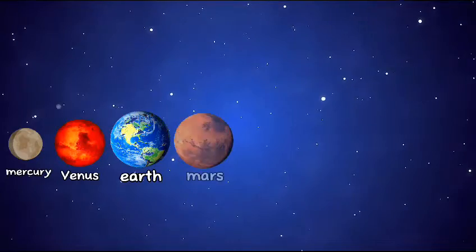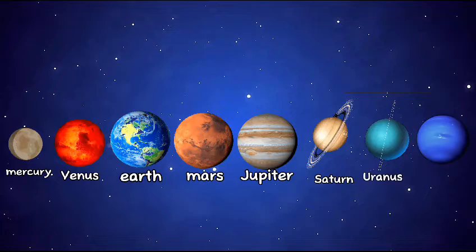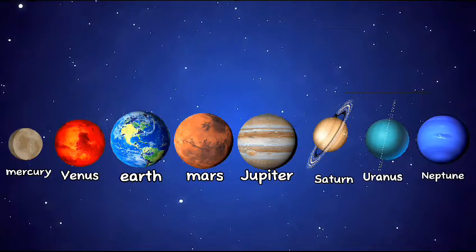Mercury, Venus, Mars, Jupiter, Saturn, Uranus and Neptune are the other planets of our solar system.